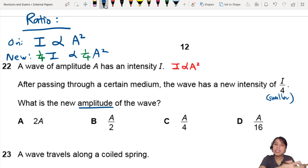So if your intensity is 1 over 4, it means A squared also has to be 1 over 4 times smaller. But what is the amplitude though?